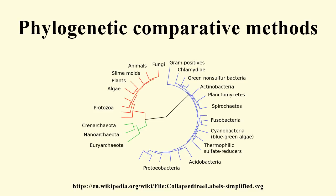Although most studies that employ PCMs focus on extant organisms, many methods can also be applied to extinct taxa and can incorporate information from the fossil record. PCMs can generally be divided into two types of approaches: those that infer the evolutionary history of some character across a phylogeny, and those that infer the process of evolutionary branching itself, though there are some approaches that do both simultaneously. Typically, the tree used in conjunction with PCMs has been estimated independently, such that both the relationships between lineages and the length of branches separating them is assumed to be known.